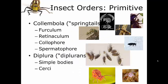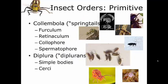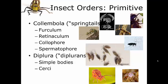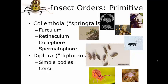We are going to start with the primitive orders. These orders are groups of insects that haven't changed much over the millennia. They still have the same basic adaptations and the same basic habitats that they did millions of years ago.